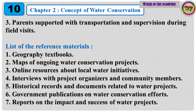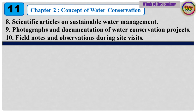Reference materials: 1. Geography textbooks. 2. Maps of ongoing water conservation projects. 3. Online resources about local water initiatives. 4. Interviews with project organizers and community members. 5. Historical records and documents related to water projects. 6. Government publications on water conservation projects. 7. Reports on the impact and success of water projects. 8. Scientific articles on sustainable water management. 9. Photographs and documentation of water conservation projects. 10. Field notes and observations during site visits.